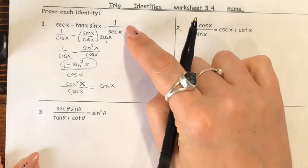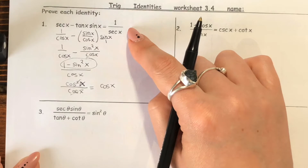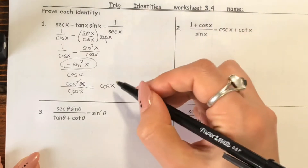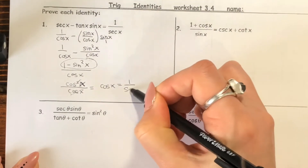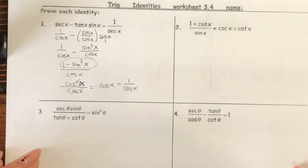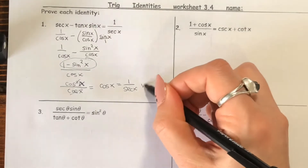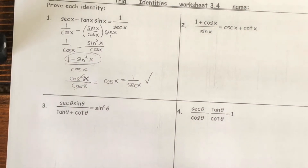We want to turn it into one over secant. But remember, cosine and secant are reciprocals of each other. So cosine of x is the same as one over secant, or vice versa — secant is the same as one over cosine. And so we got to where we needed to, and we proved the identity.